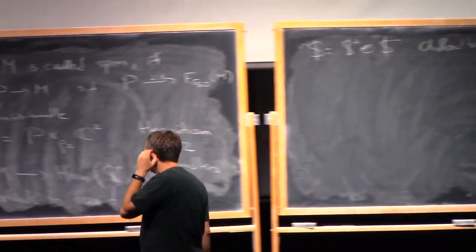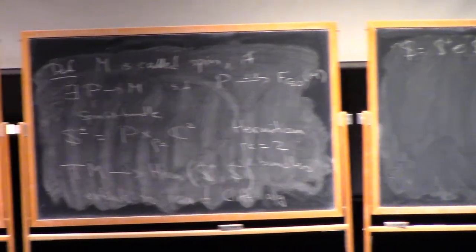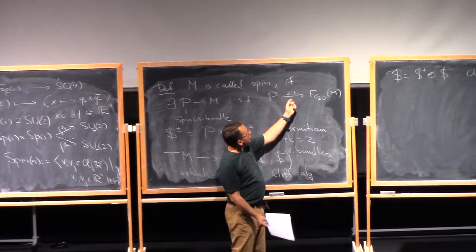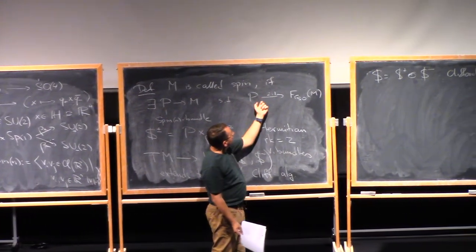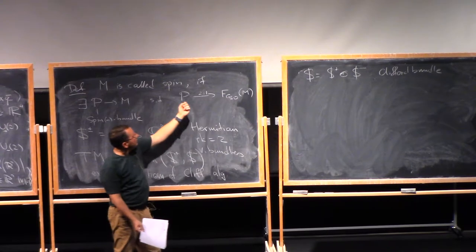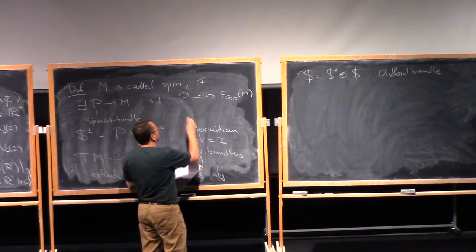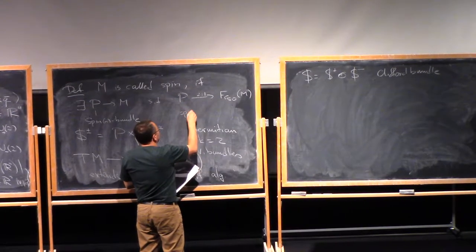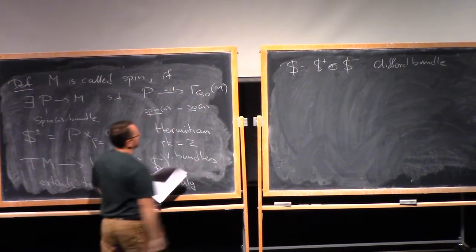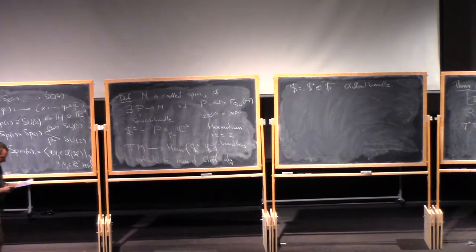So, to have a Clifford bundle, I need to have a connection on this bundle. So where do I get a connection here? This is very simple. If I have a spin structure, I have a 2 to 1 covering over the principal bundle of normal frames. Here, I have the Levi-Civita connection, so I can pull it back to the bundle P, and this is, again, a connection on this bundle, thanks to the fact that the Lie algebras of spin N and SO-N are just the same.